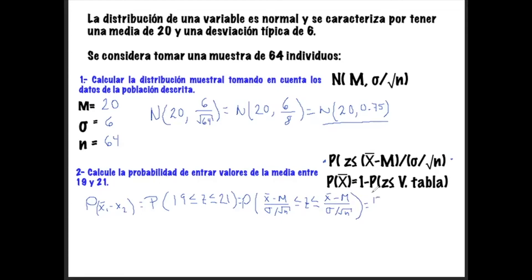Si sustituimos, tendríamos que: (19 - 20) / (6 / √64), donde la raíz de 64 es 8, sería igual mayor o igual a Z, y luego tendríamos mayor o igual a (21 - 20) / (6/8), que sería 0.75. Entonces la probabilidad que nos está arrojando esto, antes de checarlo en la tabla, sería: (-1 / 0.75) ≤ Z ≤ (1 / 0.75).